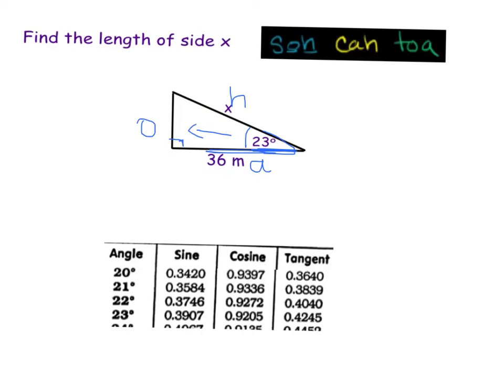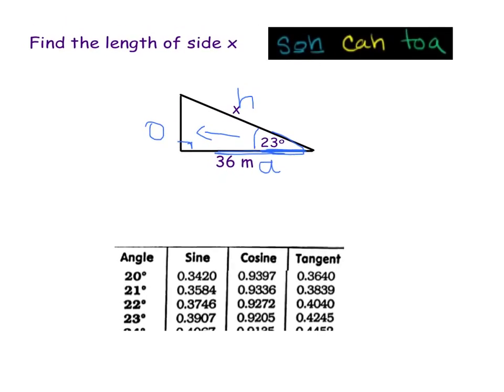So look at what sides are given to you. We are given 36 for the adjacent. We're trying to find the hypotenuse length. So we're talking A and H. So come up here to your SOHCAHTOA, and it is the cosine. So I'm looking for the cosine, so I'm going to write my ratio. The cosine of 23 equals the adjacent 36 over the hypotenuse, which is my X. So now I'm going to look at my table. 23, and I'm at the cosine column, so 0.9205 equals 36 over X.